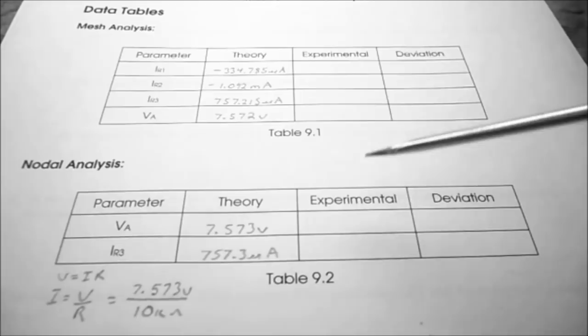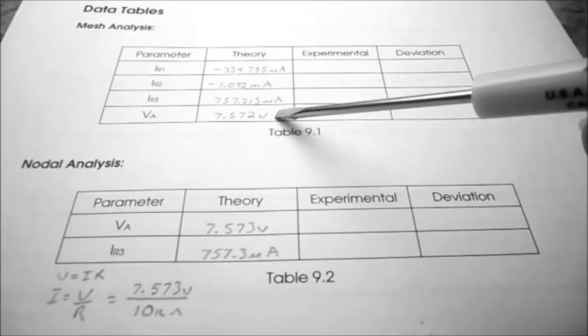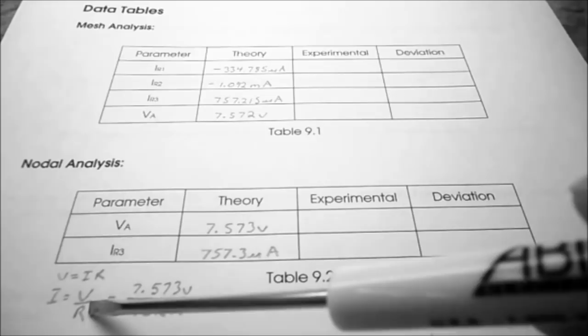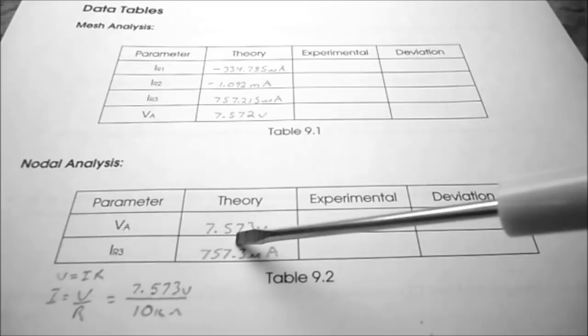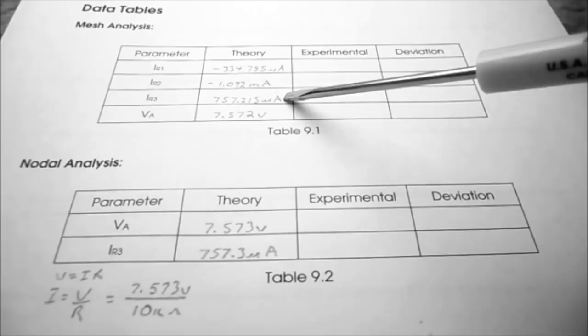In table 9.2 I've recorded VA as 7.573 volts, which is very close to the 7.572 volts calculated using mesh analysis. To find the current through IR3, I take V over R: 7.573 volts divided by R3 (10K ohms) works out to 757.3 microamps, which is again close to the 757.215 microamps calculated using mesh analysis.